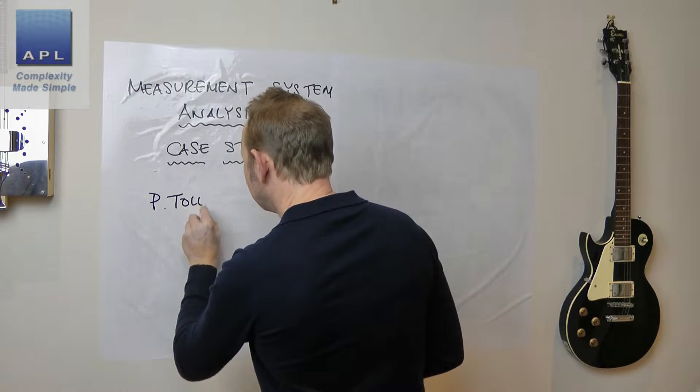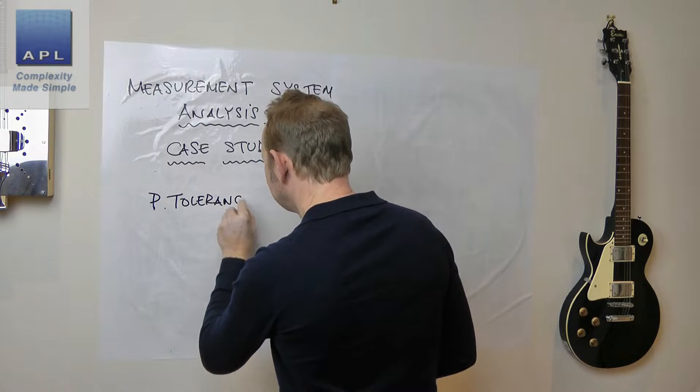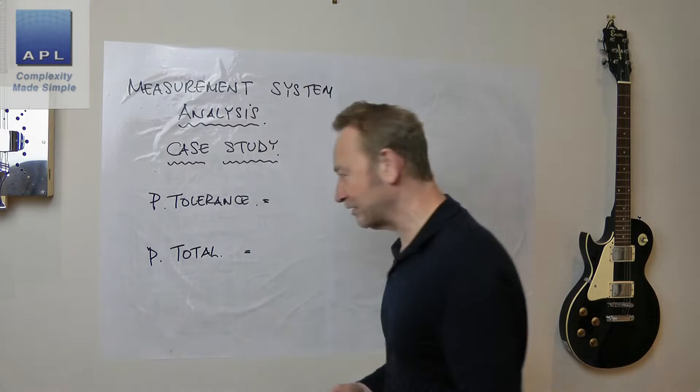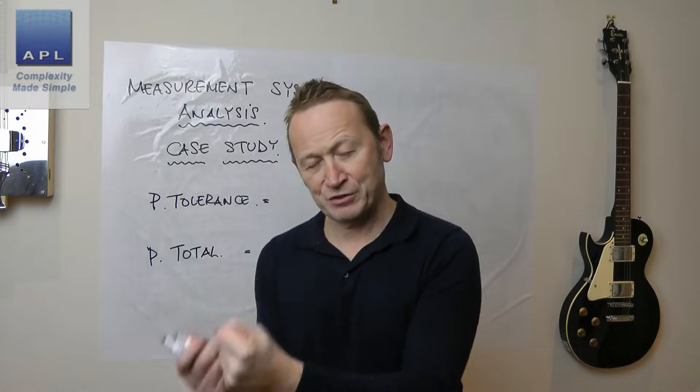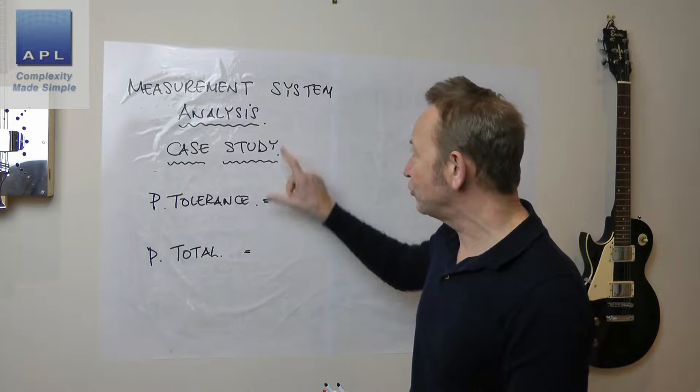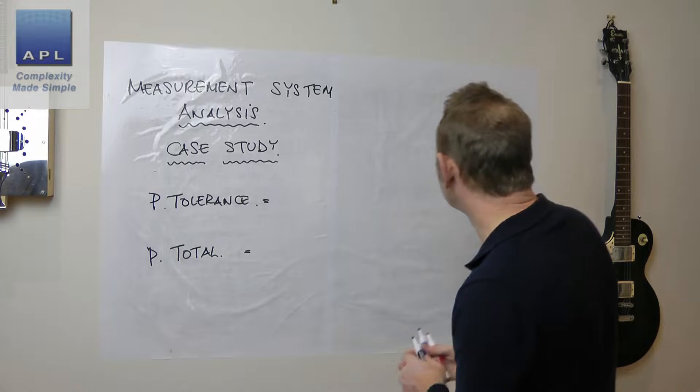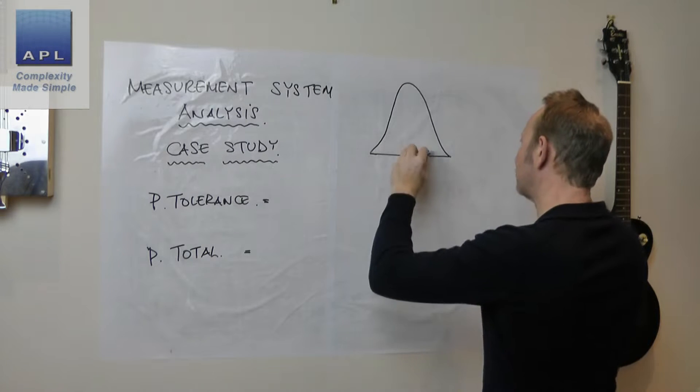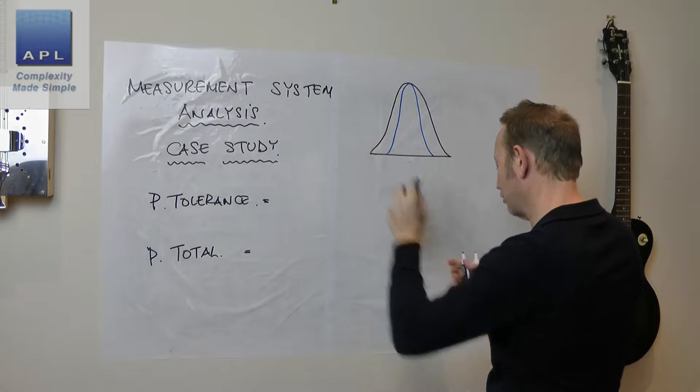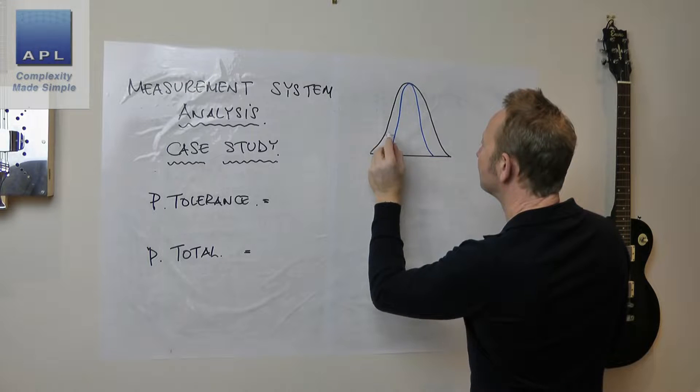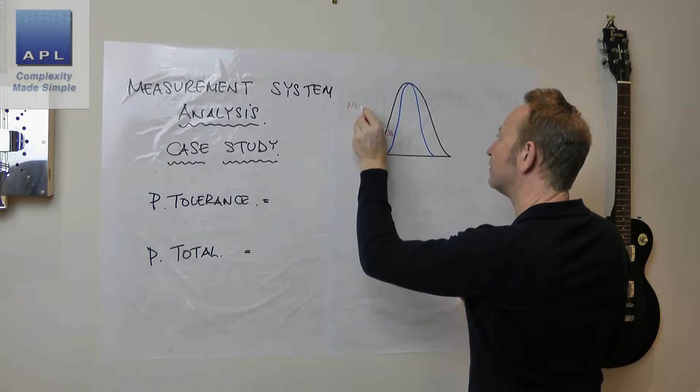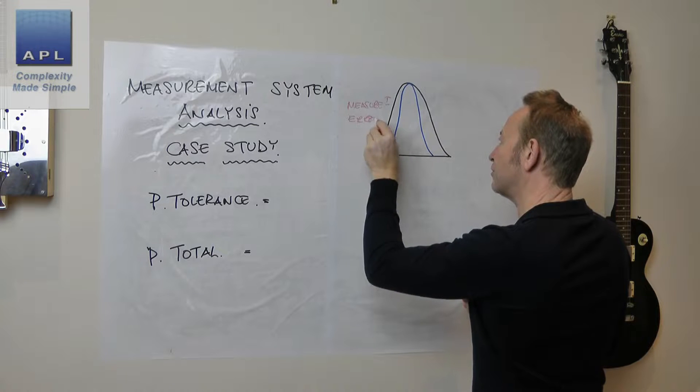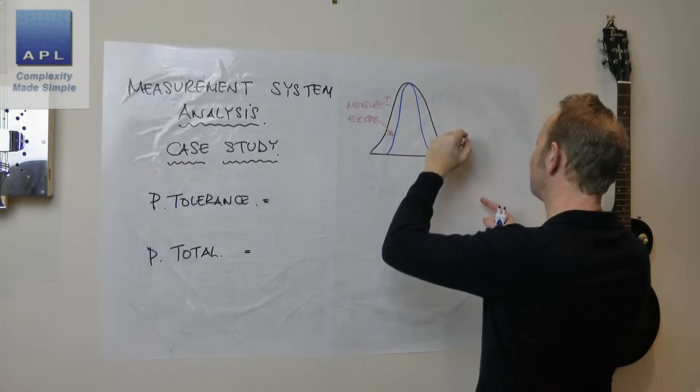So we've got precision to tolerance and precision to total. So just a reminder, precision to tolerance, precision to total variability. So they're the two measurements that we use. They're the first two statistics that we use to answer the question, is my measurement system any good? And of course, what we're trying to find out, you observe the black distribution. What's really there is the blue distribution and the inflation that's caused here?